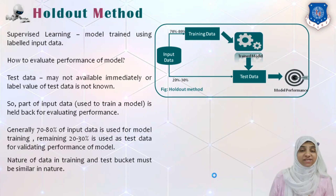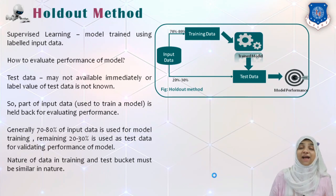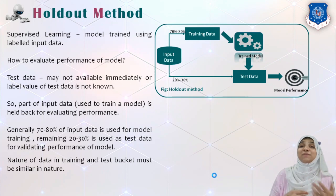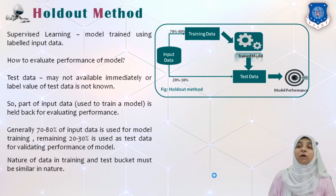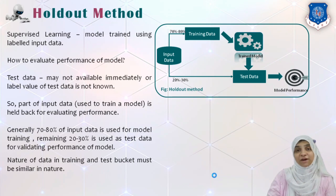So 70-80% of data is used for training and the remaining 20-30% is used as test data for evaluating the performance of a model. The nature of the data in training and testing must have similarity — the distribution of types or nature of samples must be equally distributed in training as well as testing. That's why we generally use random sampling.